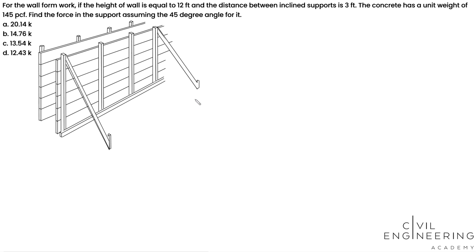Let's find out what is the force in the support if we assume it's at a 45-degree angle. So in this picture, it shows that this is the wall form and it's supported by this inclined support at 3 feet apart. And the wall height right here is going to be 12 feet. And this inclined support is attached to the top of the form work. And there's another longitudinal support at the bottom right here.